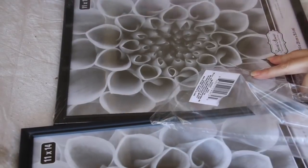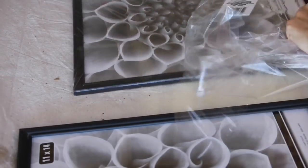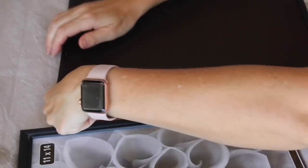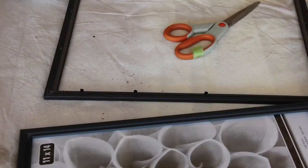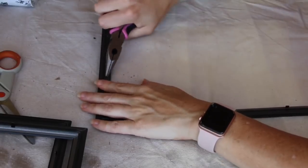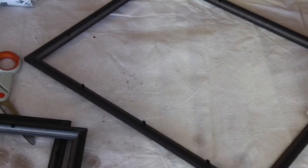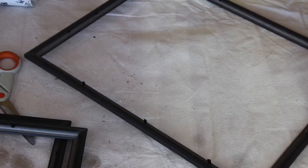First you're going to take off the outside plastic and after that you're going to open up the back of the frame. You're going to remove everything inside, so you take off the backing, the paper, and the glass, and you're going to do that to all three frames. Set all three pieces of glass aside and you'll get back to those in just a little bit.